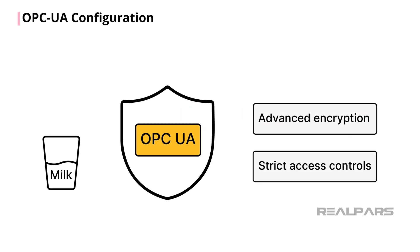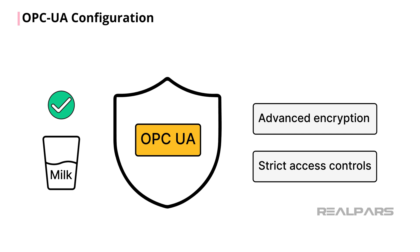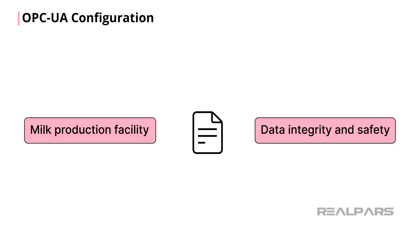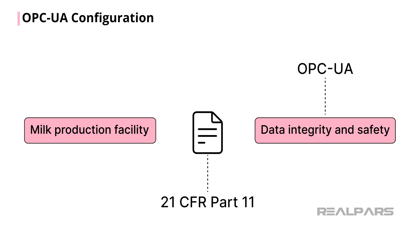OPC UA is fortified with advanced encryption methods and strict access controls. These security features are critical to maintaining food safety and regulatory compliance. Given the strict requirements of food safety, OPC UA provides an impregnable fortress of encryption and strict access controls that ensure the milk stays pure in taste and in data too. Milk production facilities are subject to 21 CFR Part 11, which places requirements on manufacturers for data integrity and safety. OPC UA is built to support these requirements.